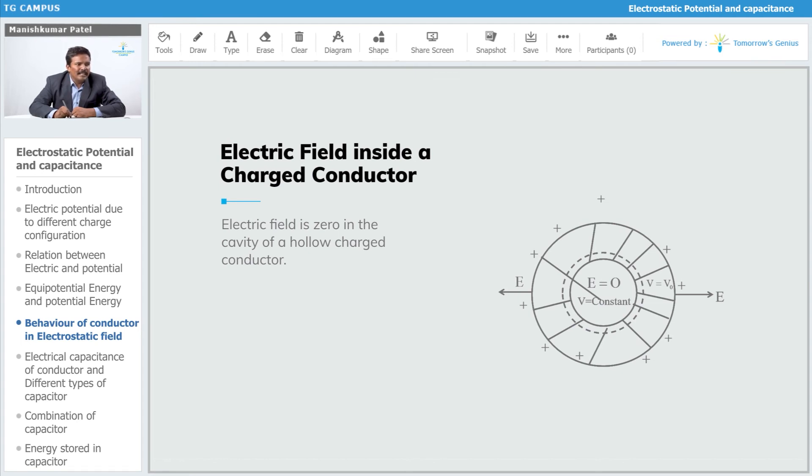This Gaussian surface doesn't contain any kind of charge, so definitely the field is zero. If electric field is zero, then obviously the potential is constant. So the electric field is always zero in the cavity, meaning it is insulated from the external electric field.